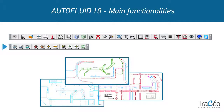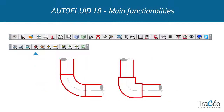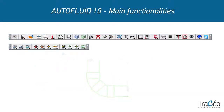Six double line routings are available: circular and rectangular duct, exhaust duct, metallic or PVC pipes, and drain pipes.